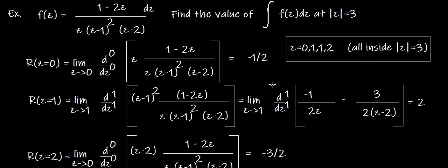Residue at z=0: limit z→0, zero differentiations (simple pole). Write z · f(z) = z · (1−2z) / [z · (z−1)² · (z−2)], cancel z, and apply the limit. Substituting z=0 gives 1 / [(−1)² · (−2)] = −1/2.